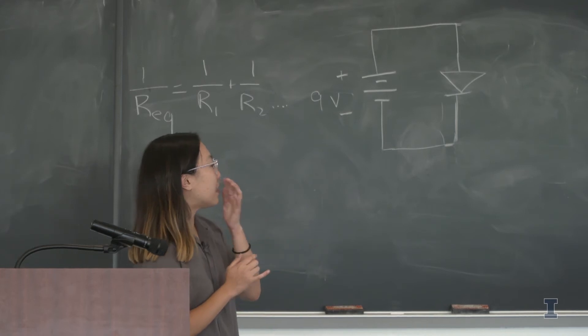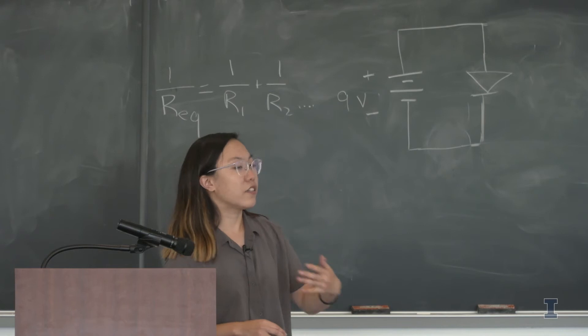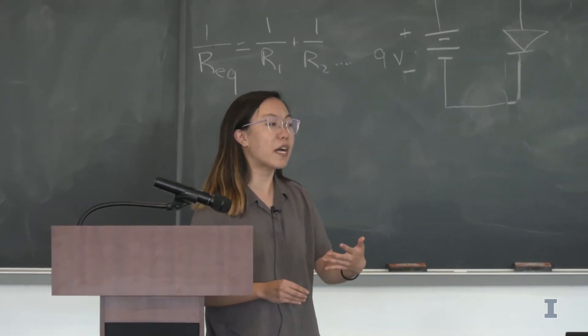One thing to note is that, unlike resistors, diodes have a set voltage they will always consume. You guys saw that when you had one battery versus two batteries. If you had one battery, it didn't always turn on.